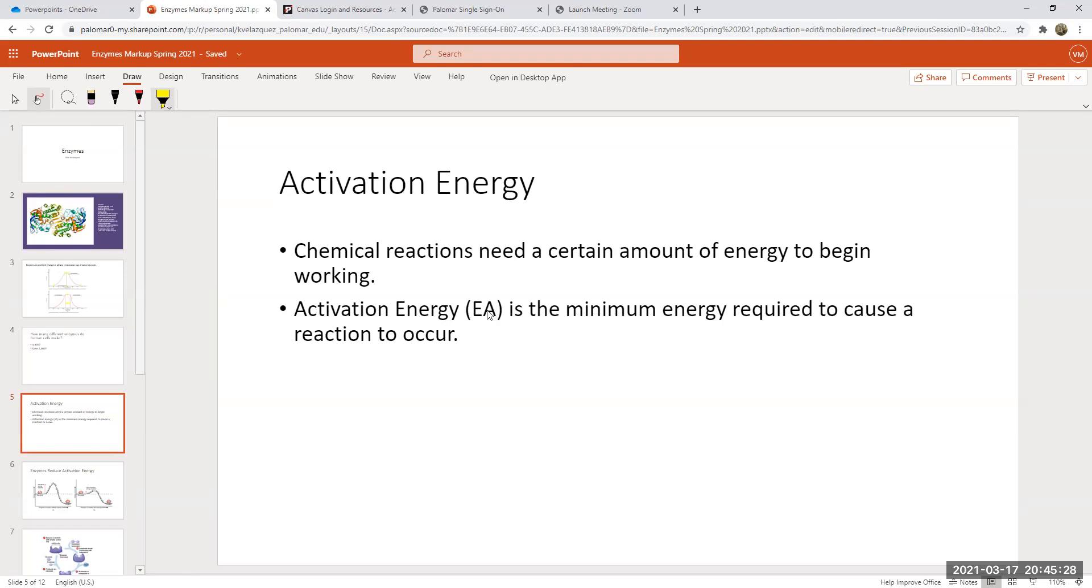Activation energy, also called energy of activation, should be written as E with a superscript A. What enzymes do is they reduce the amount of activation energy needed.